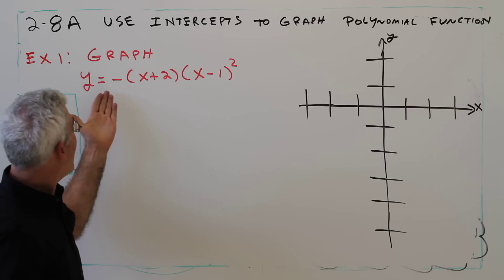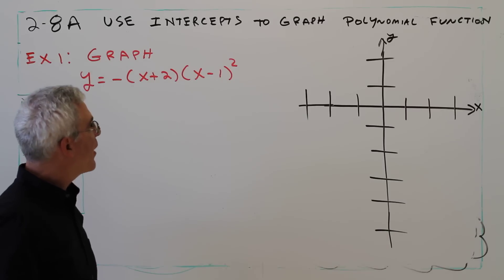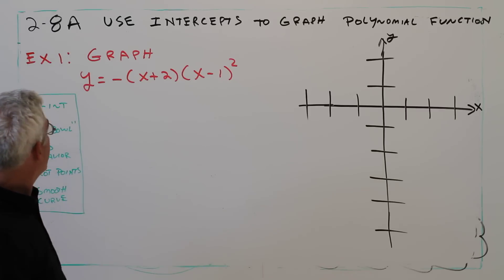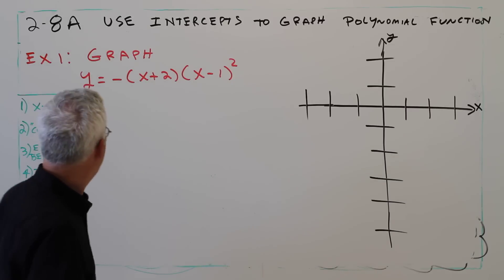Example 1. Graph y equals negative x plus 2 times x minus 1, the quantity squared. Step 1 is to find the x-intercepts. We're in intercept form already, so it'll be very easy.